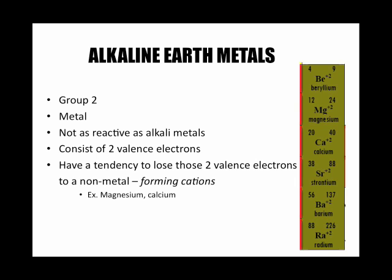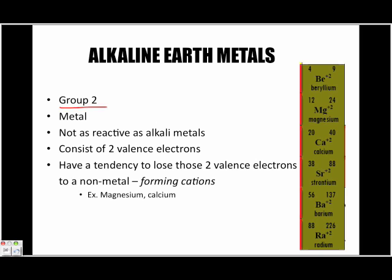Alkaline earth metals consist of two valence electrons. We said in a previous lesson that the group number tells us the number of valence electrons — group number two means two valence electrons. They have a tendency to lose those two valence electrons to a non-metal, and because they lose electrons, they form cations. Two examples are magnesium and calcium.